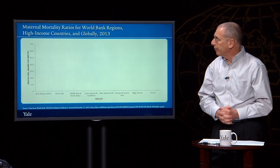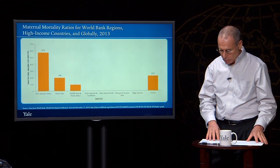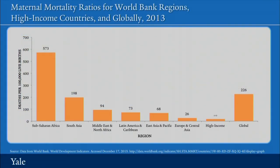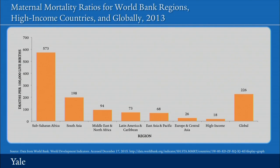Let's look for a minute at maternal mortality ratios for World Bank regions, high-income countries, and globally. This is the number of women who die of maternal causes for every 100,000 live births. In high-income countries, this is quite a rare event. But the rate of maternal mortality in sub-Saharan Africa is more than 30 times the ratio in high-income countries, and in South Asia the ratio is more than 10 times that in high-income countries. As we'll discuss further, this reflects the status of women, their economic empowerment and agency, and the opportunities that women have to access good prenatal care, skilled attendance at delivery, and emergency obstetric care.